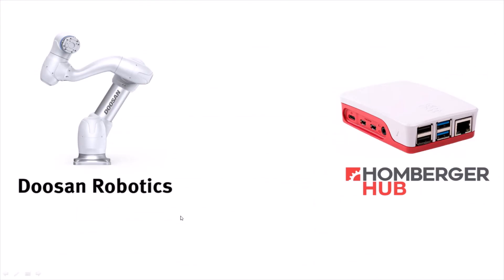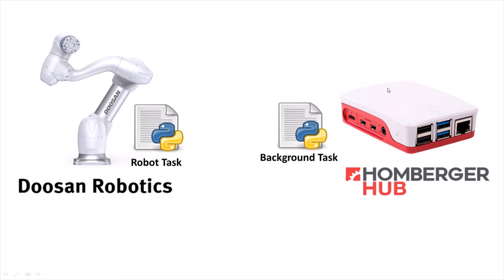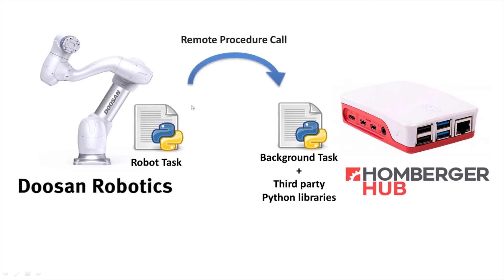As a recap of what we have done in this lesson: usually we define robot tasks that run on the robot. In this lesson, we have learned how to set up and run background tasks that run on the Homburger app. Those background tasks can use third-party Python libraries, so we can extend and integrate many libraries as we want. We have also seen how to use remote procedure call to call functions defined in the background tasks and give results to the robot program, making it very simple to use those functions in a transparent way as if they were defined in the robot program itself.